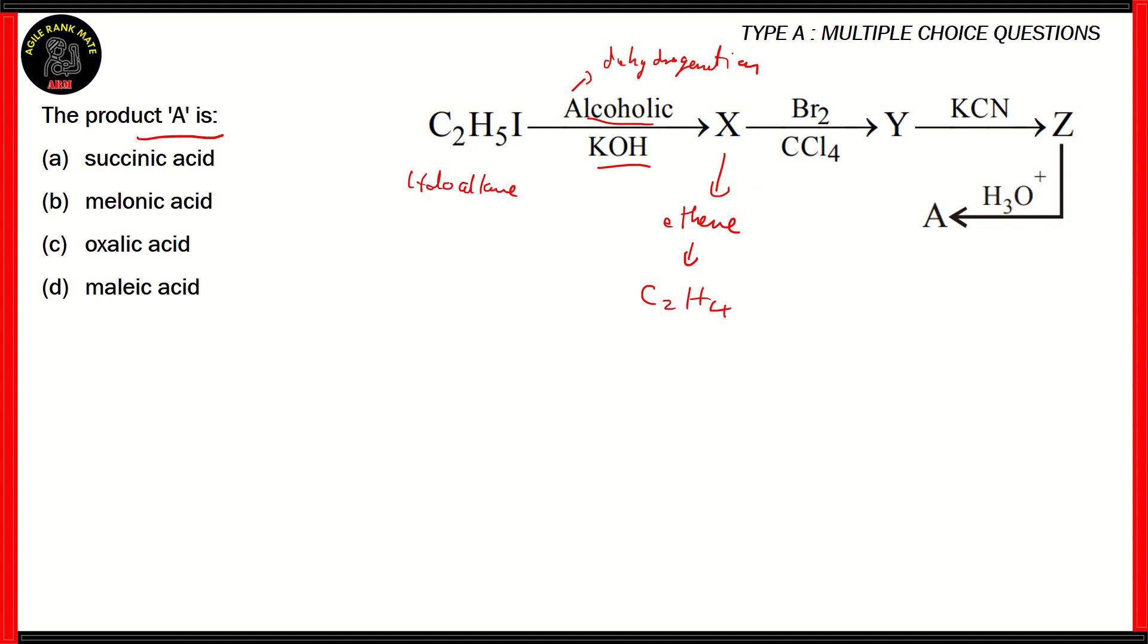Now ethene means that the carbon-carbon bond is a double bond. So that means we have C2H4 as the X product. Now, the ethene here is then reacted with bromine and CCl4. So when you have halogen and CCl4, you form a halo-alkane from the alkene. So since here it was ethene, the product Y in this case is CH2CH2Br. So this is dibromoethane.